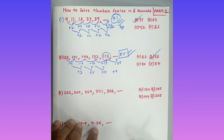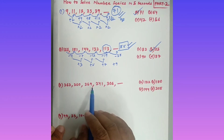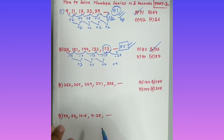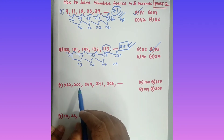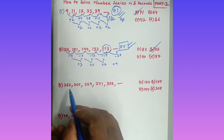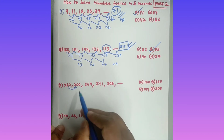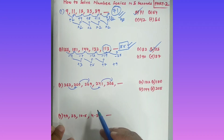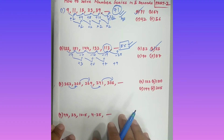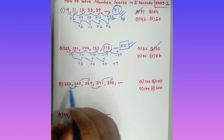Now question number 3: 262, 260, 269, 241, 306, dash. How can you solve this? Comparing consecutive numbers: 262 to 260 is decreasing, 260 to 269 is increasing, 269 to 241 is decreasing, 241 to 306 is increasing — alternating decreasing and increasing. You need to think carefully about what logic to apply.